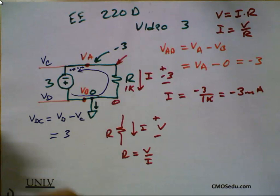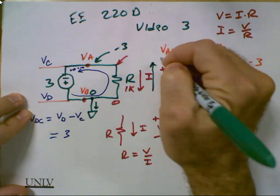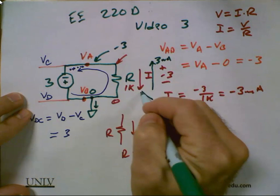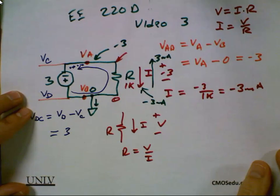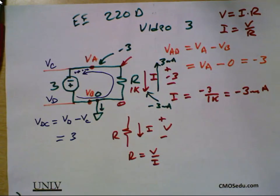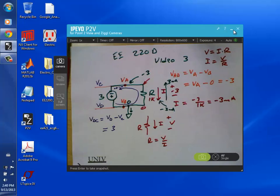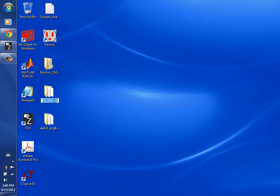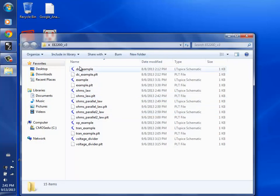So what's another way of drawing that? I could say it's three milliamps going up that direction, or it's minus three milliamps going this direction. So let's stop and simulate this circuit. Let's rename this version three and delete everything in it, then start fresh.